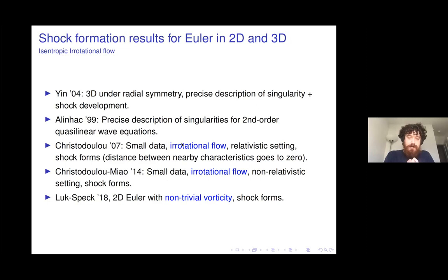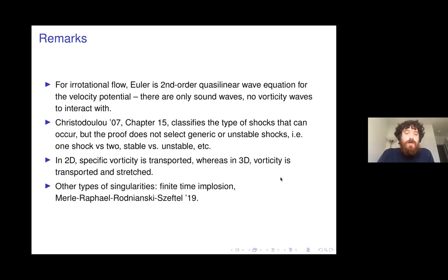In all these cases, shocks are shown to form, but not as precisely as results that classify the type of singularity. For irrotational flow, the Euler equation becomes a second-order quasi-linear wave equation — you have sound waves but no vorticity waves to interact with, making the system much simpler. Christodoulou and Eve's book classifies different types of shocks — stable, unstable — but doesn't definitively prove, given certain initial data, that a particular singularity occurs. This matters for the shock development problem, since you need very precise information about the singularity.